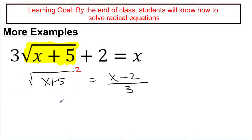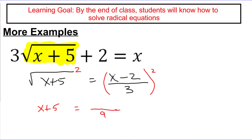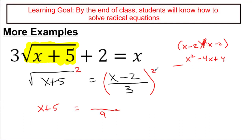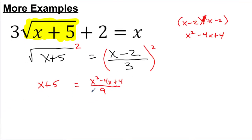Now is the step where we want to square away the radical. The left-hand side works out nicely — I get x plus 5. On the right, I need to square this big expression, which is not all that nice. The denominator squares nicely: 3 squared is 9. The numerator is x minus 2 squared, which means x minus 2 times x minus 2. Multiplying that out gives x squared minus 4x plus 4. So this expression represents my numerator, and putting it all together I have x squared minus 4x plus 4 over 9.